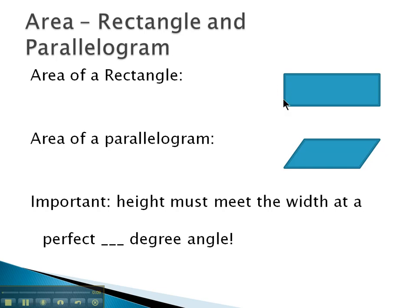Rectangles have some type of width and some type of length to them. The way we calculate the area, or how much stuff it takes to fill up the rectangle, is we simply multiply the length times the width.